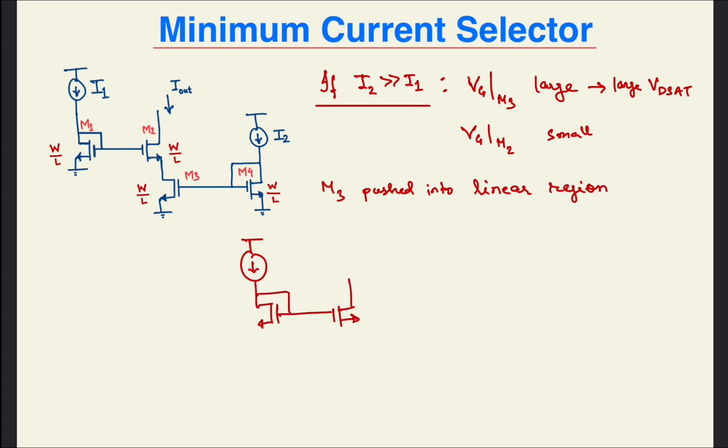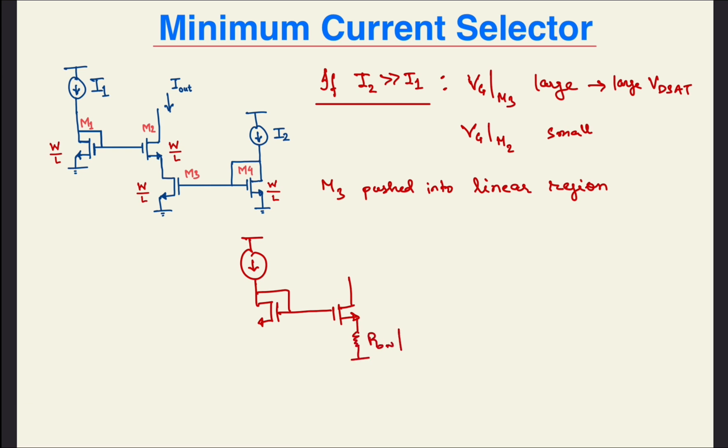This is still a current mirror, but it has an inherent error due to the asymmetrical source degeneration. The source of M1 is grounded, whereas the source of M2 would have a small voltage of about 15mV depending upon the RON of M3. So, the current Iout is approximately I1.